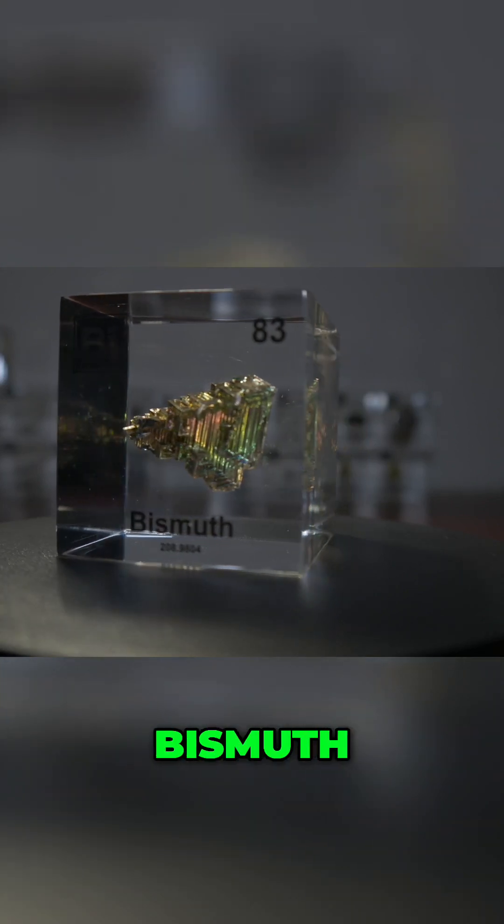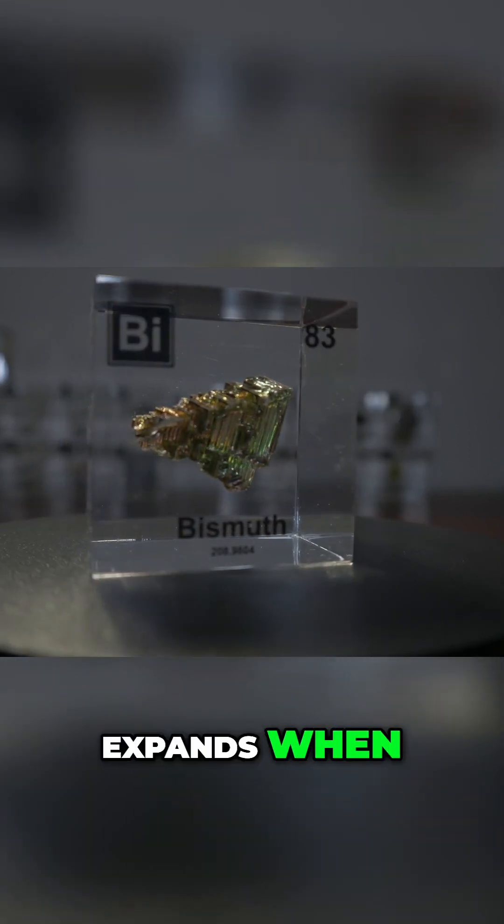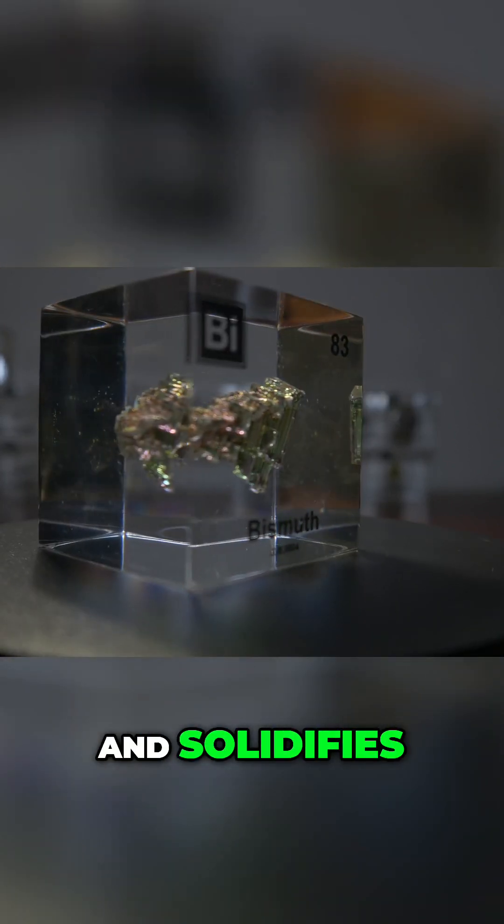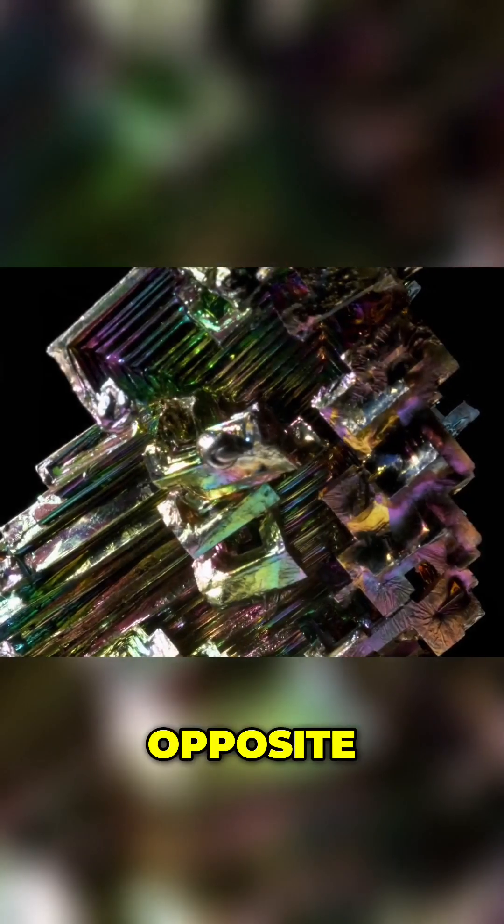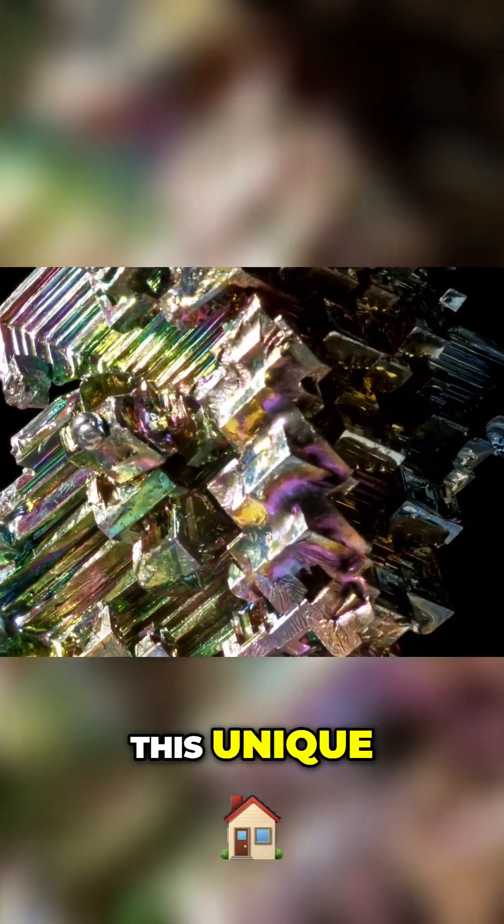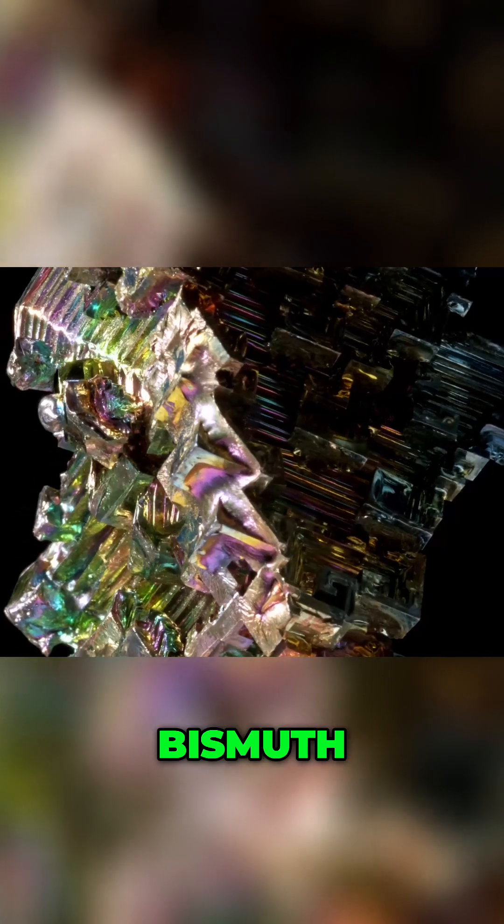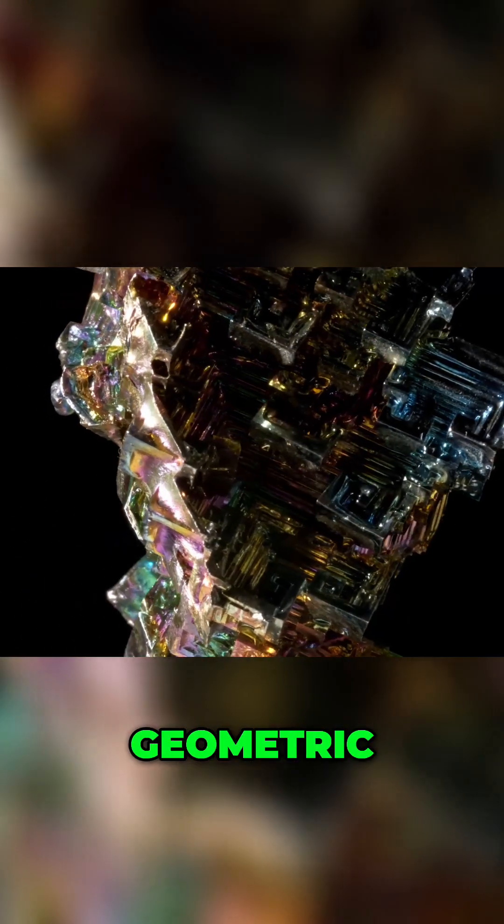But there is something weird. Bismuth actually expands when it cools down and solidifies, which is the opposite of what most metals do. This unique property is what gives bismuth crystals their fascinating geometric shapes.